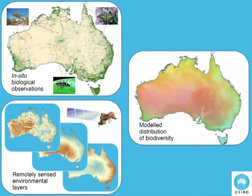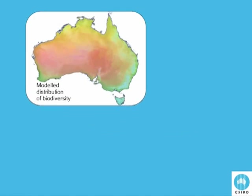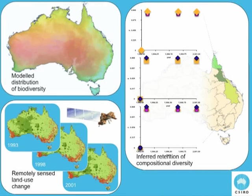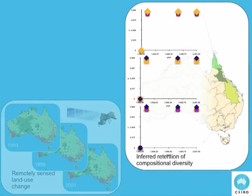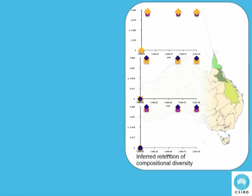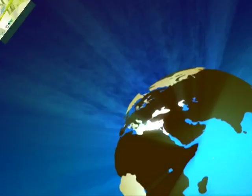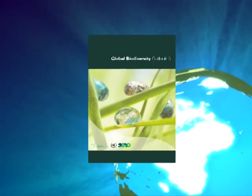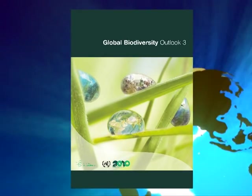Satellite images can also provide an indication of how land use and vegetation condition changes over time. Combining these remote sensing and biodiversity data, Australian partners in the network are able to estimate how much overall biodiversity is retained as a result of these changes. This allows indicators of loss and threat such as those found in UNEP's Global Biodiversity Outlook 3 to be calculated.